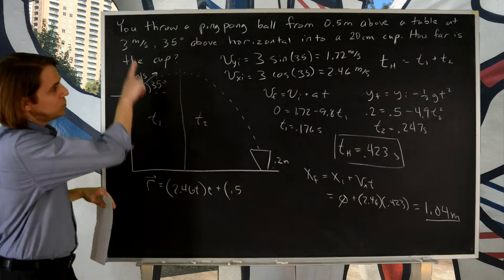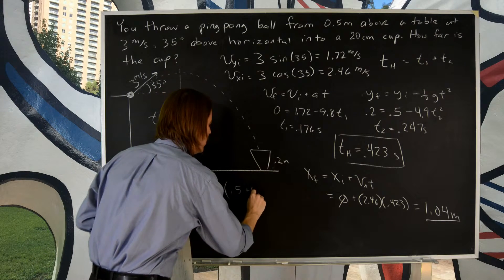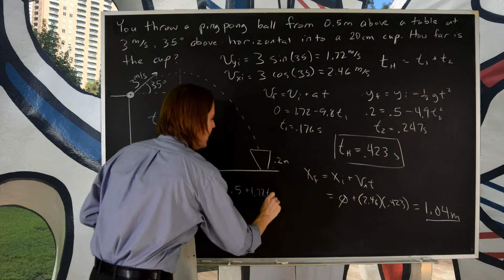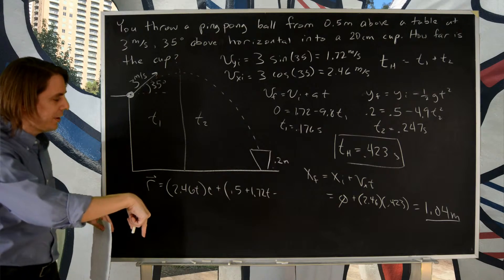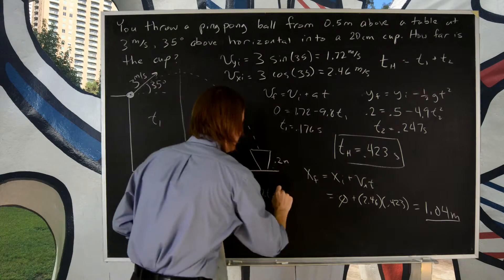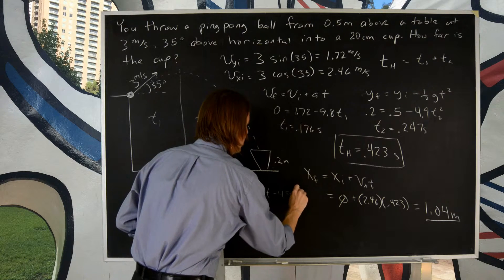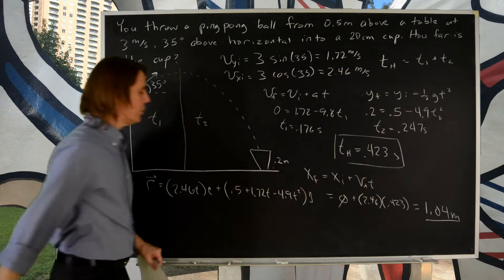And then in y, you could say it had an initial 0.5. It did have an initial y plus 1.72t. And then it also had a gravitational term pulling it down. Minus 1.5g minus 4.9t squared.